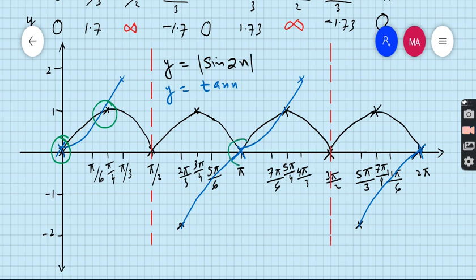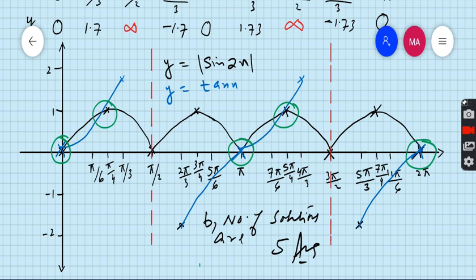Point number 3, this one. Point number 4, this one. Point number 5, this one. So for part b, number of solutions are 5 and this is our final answer. So hope you completely understand question number 6, a very interesting and very important question according to examination point of view.